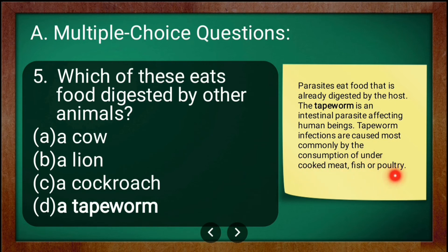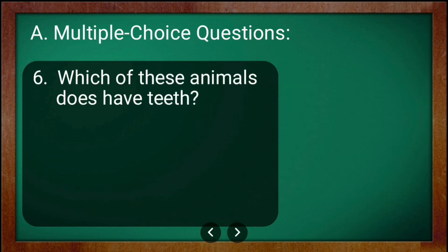Tapeworm infections are caused most commonly by consumption of undercooked meat, fish, or poultry. We should always cook flesh — especially meat, fish, or any poultry — properly so that we don't get this kind of parasite.